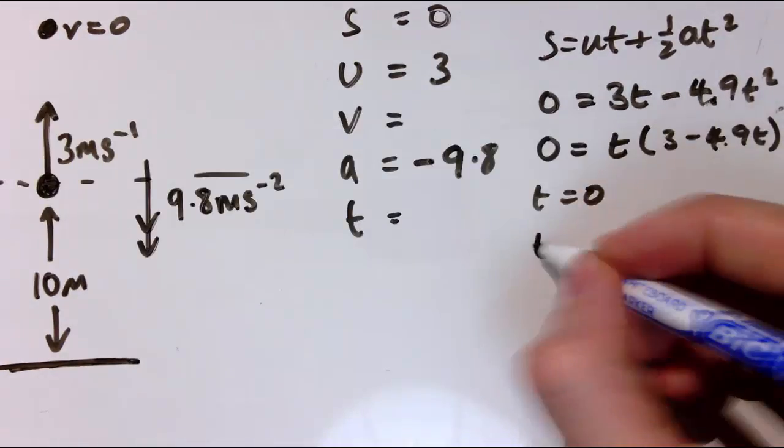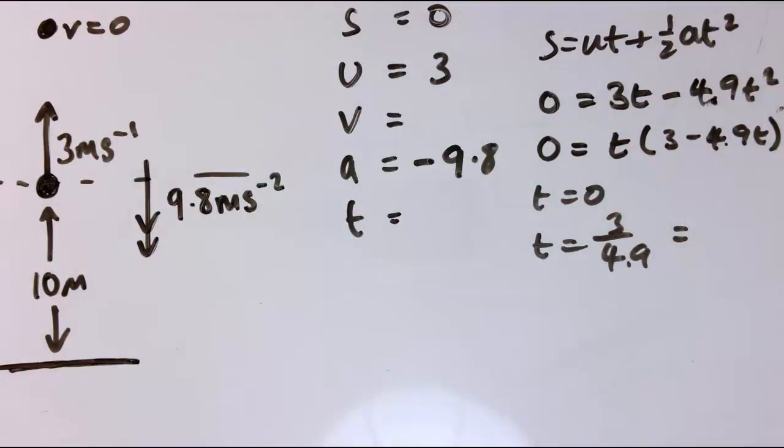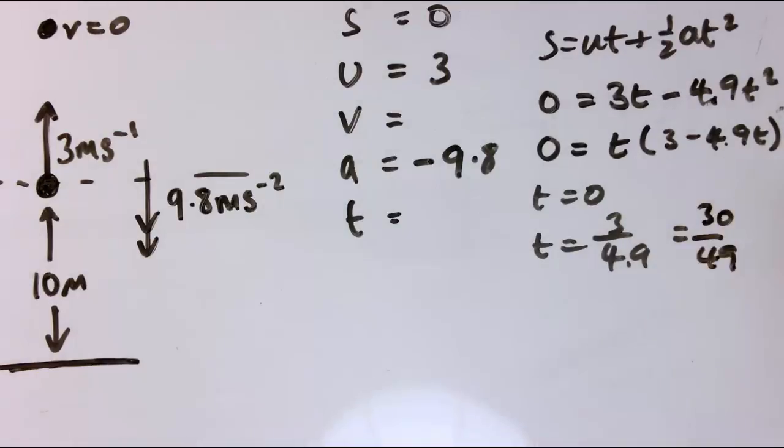So the solutions are T equals zero, and T equals three divided by 4.9, which I could tidy up as 30 over 49 seconds. Now, two interesting things here.